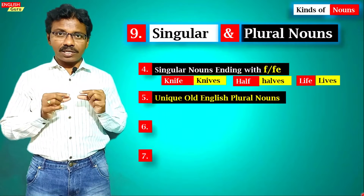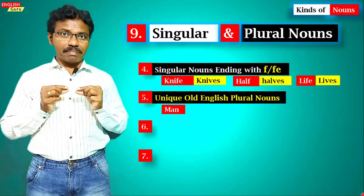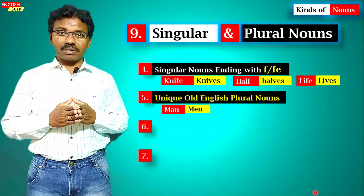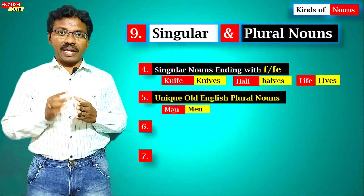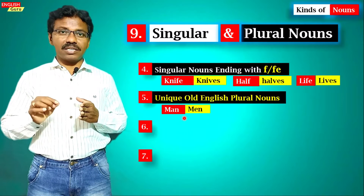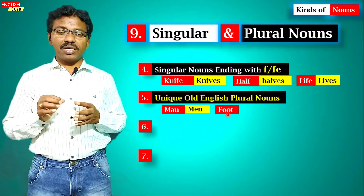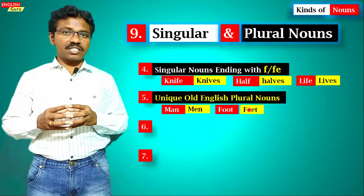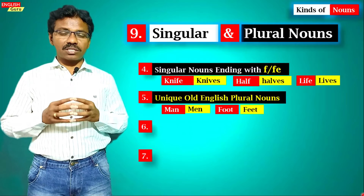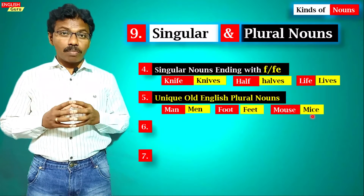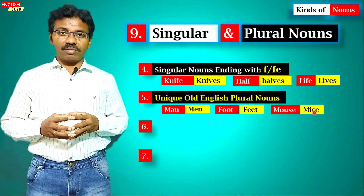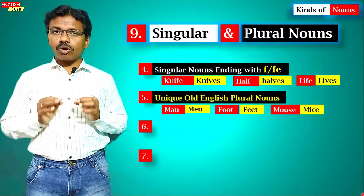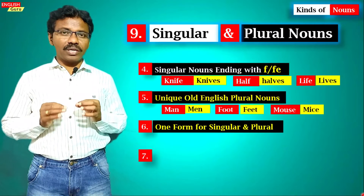Another rule covers unique Old English plurals — the ending does not change, but the vowel in the middle changes. For example, 'man' (singular) becomes 'men' (plural) — 'a' changes to 'e.' 'Foot' becomes 'feet' — 'oo' changes to 'ee.' 'Mouse' becomes 'mice' — the vowel changes in the middle. We should be careful about these Old English plural forms.